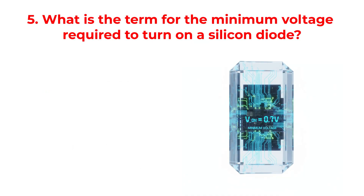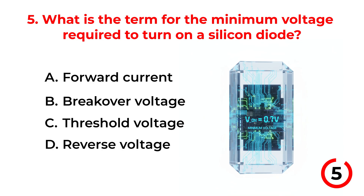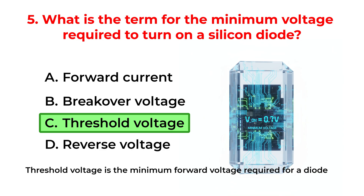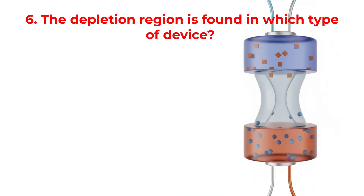What is the term for the minimum voltage required to turn on a silicon diode? A. Forward current. B. Breakover voltage. C. Threshold voltage. D. Reverse voltage. The correct answer is Option C: Threshold voltage. Threshold voltage is the minimum forward voltage required for a diode to conduct.